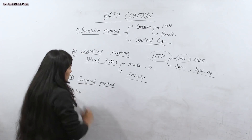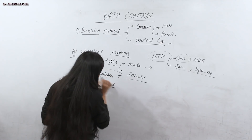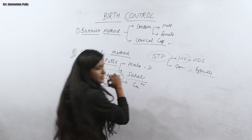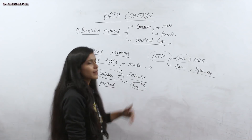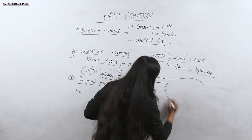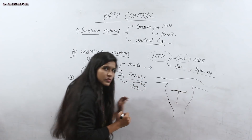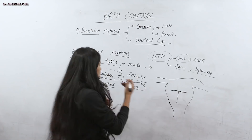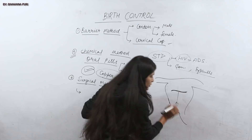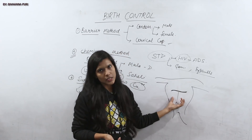After that, one more method under chemical — the Copper-T. As the name suggests, it is a T-shaped structure that releases copper ions. When copper ions are released, they suppress the sperm's motility. During intercourse, when sperm enters the female body, the copper ions suppress sperm movement. If fertilization does happen, it makes the uterus unstable so that implantation does not occur.